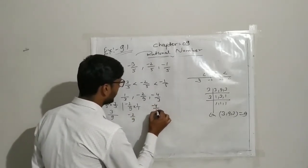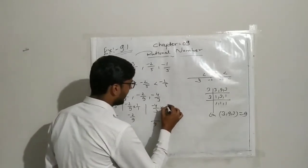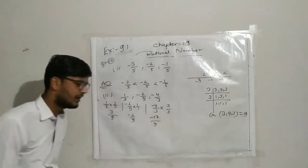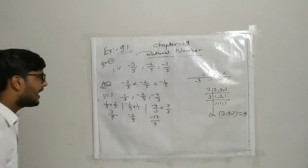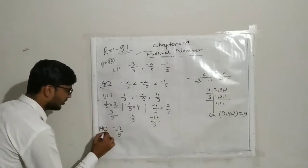And this minus 4 upon 3, to make its denominator 9, you have to multiply by 3. So it will become minus 12 upon 9. Now on the number line, minus 12 upon 9 has the least value. Your ascending order is complete.